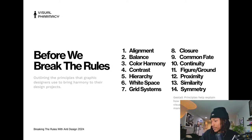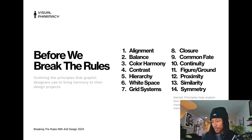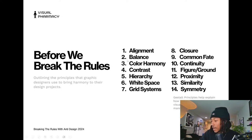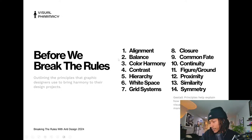Figure-ground is the ability to distinguish an object from its background — a good example is the FedEx logo with the hidden arrow. Proximity is when objects closer together are perceived as being related — two or three objects on the left and a different set on the right are perceived as separate groups. Similarity is the idea that objects of the same color, shape, size, or texture are perceived as more related.